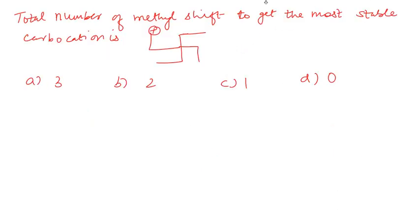Hello everyone. Here we have to discuss the total number of methyl shifts to get the most stable carbocation. Options are A: 3, B: 2, C: 1, D: 0. You can take 2 minutes for this question. The answer is option D — there will not be any methyl shift.